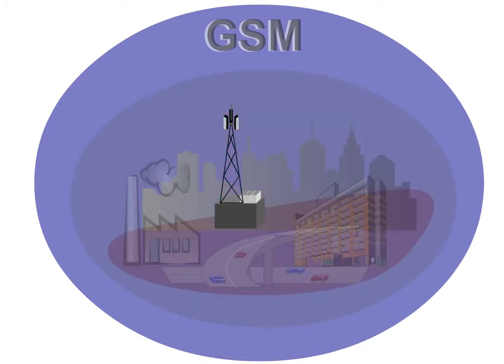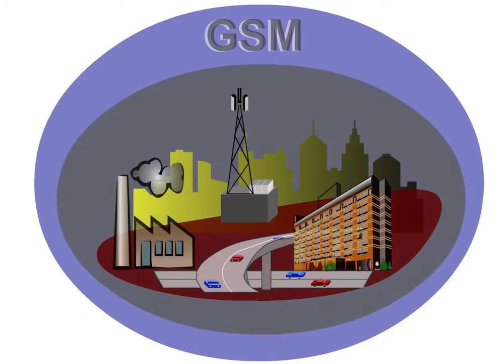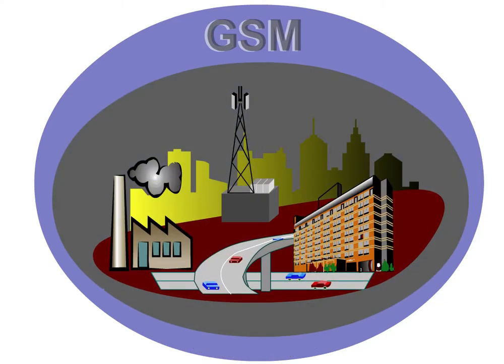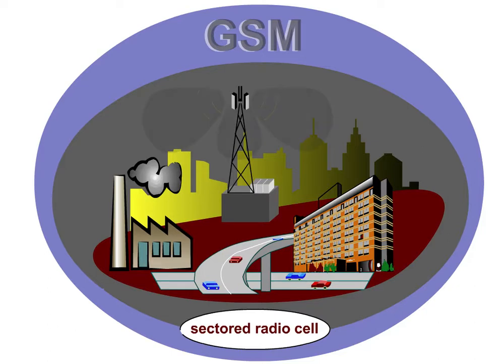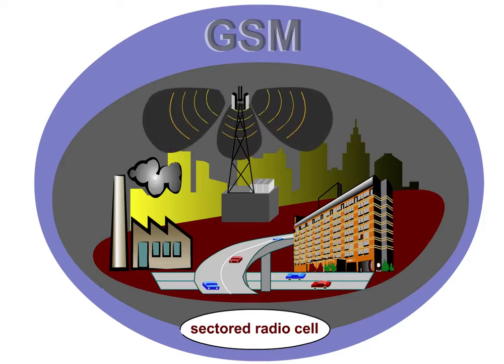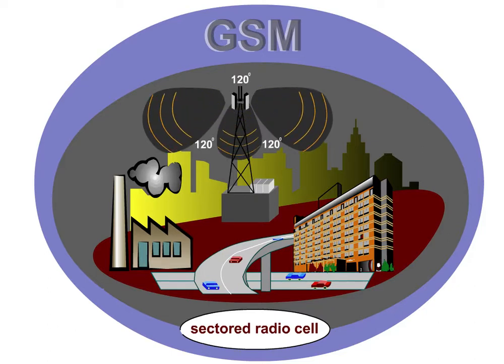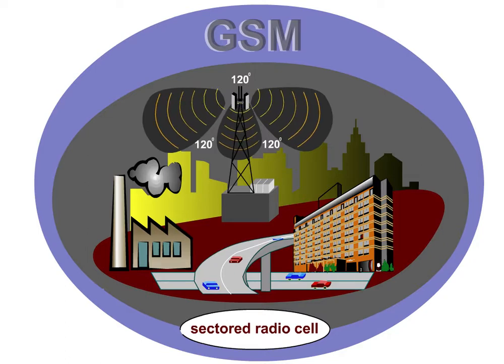In densely populated areas, the network must supply higher capacities. One way of doing this is the sectorisation of radio cells. With a sectored radio cell, the BTS can supply up to three radio cells in 3x120 degrees with several frequencies each.